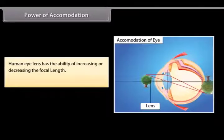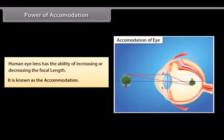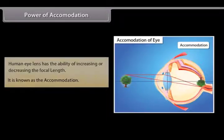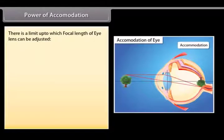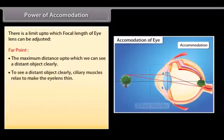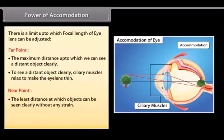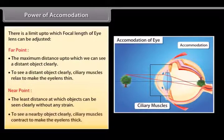Power of accommodation: The human eye lens has the ability of increasing or decreasing its focal length, known as accommodation. This is achieved with the help of ciliary muscles. The far point is the maximum distance up to which we can see a distant object clearly; ciliary muscles relax to make the lens thin. The near point is the least distance at which objects can be seen clearly without strain; ciliary muscles contract to make the lens thick.